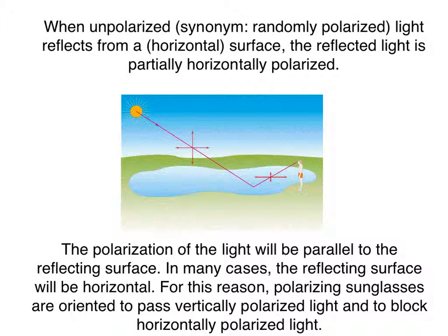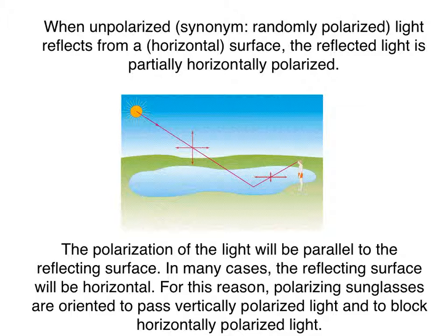Some types of sunglasses are advertised as being polarized. Polarized sunglasses can remove the glare from the road or from the surface of a lake. When unpolarized or randomly polarized light reflects from a horizontal surface, the reflected light is partially horizontally polarized — the polarization of the light will be parallel to the surface. Since reflecting surfaces such as roads or lakes are often horizontal, polarizing sunglasses are oriented to only pass vertically polarized light and to block horizontally polarized light.